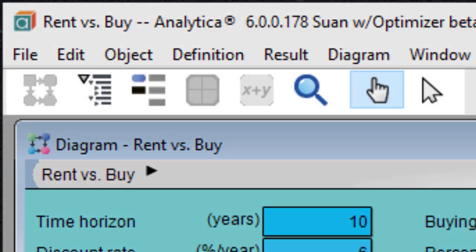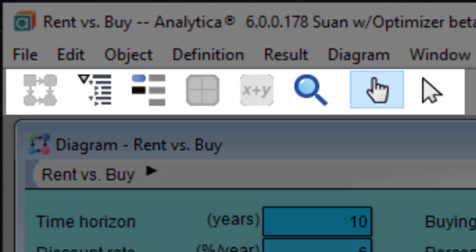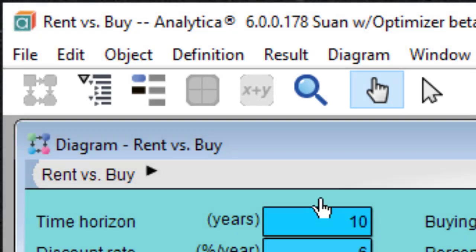Across the top of the screen is a horizontal palette of buttons. This is called the Tools palette or toolbar. When you first open the Rent vs. Buy model, the Browse tool is highlighted on the palette. With the Browse tool selected, the cursor looks like a hand when it's over the diagram.